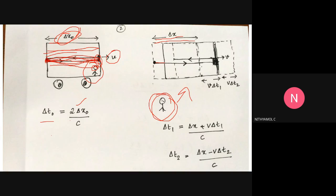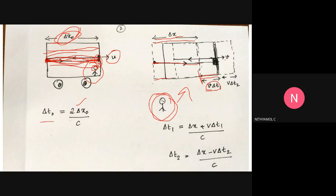Now let's see how you observe the light source and the train. The train is moving forward. In the time delta t1, the train has moved a distance v*delta_t1. So the total distance the light travels forward to reach the mirror is delta x plus v*delta_t1.